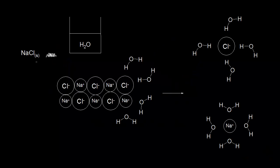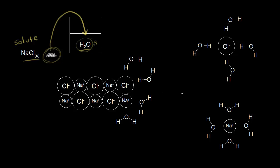Let's say we have some solid sodium chloride, so some salt, and we're going to put our salt into some water — a beaker containing H2O. The sodium chloride is going to dissolve in the water. So the sodium chloride is our solute, and the water will be our solvent. This is the process of dissolution.